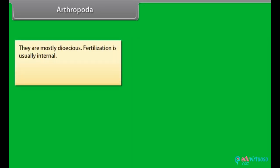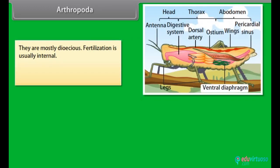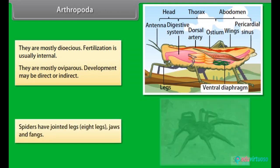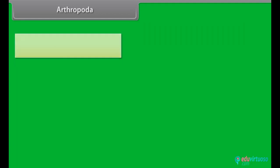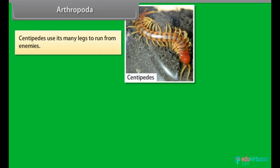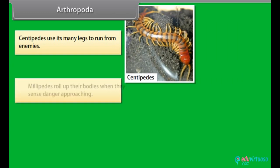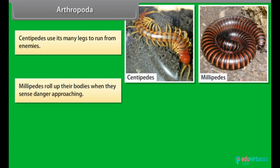They are mostly dioecious. Fertilization is usually internal. They are mostly oviparous. Development may be direct or indirect. Spiders have jointed legs, eight legs, jaws and fangs. Centipedes use their many legs to run from enemies. Millipedes roll up their bodies when they sense danger approaching.